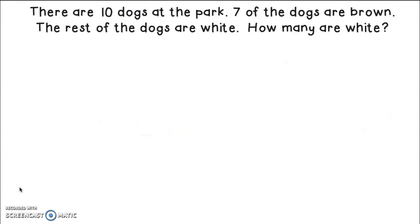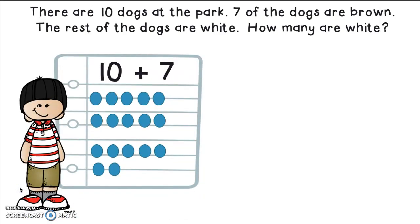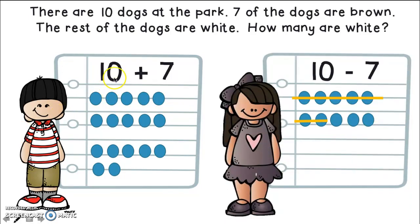Let me read the problem one more time. There are 10 dogs at the park. Seven of the dogs are brown. The rest of the dogs are white. How many are white? Let's look at their pictures of their good work. Remember, our pictures show our good thinking. Shane had 10 plus seven. He drew a picture of 10 and then seven more. Kara drew a picture of 10 and then she subtracted and showed her good thinking with the crossing out of seven of them.